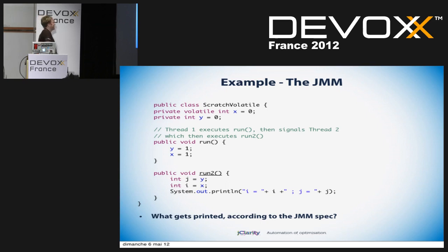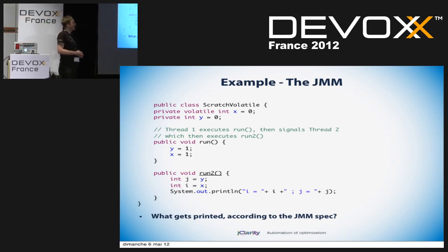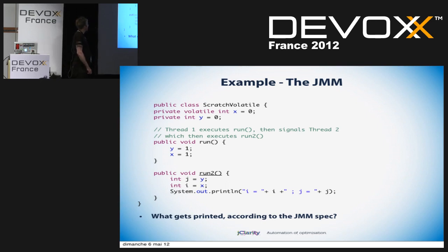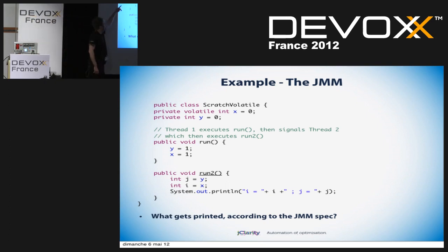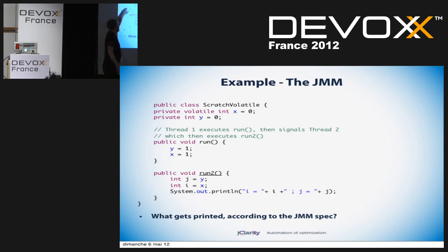Here's a class called ScratchVolatile, and we're talking about the behavior of volatile fields and non-volatile ones. We've got two integer fields: integer x and integer y, and integer x is volatile. The question is: if one thread starts executing this method, finishes, and then signals a second thread to come and execute this method, what gets printed according to spec?